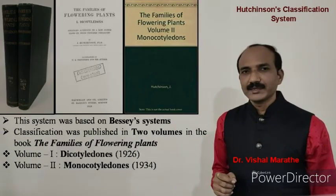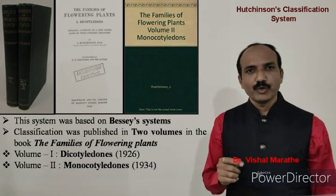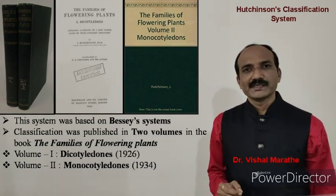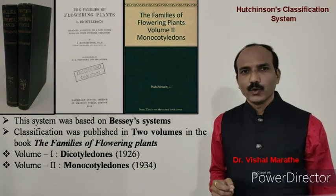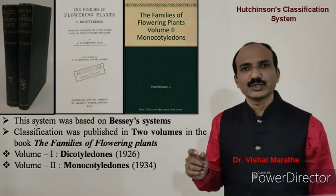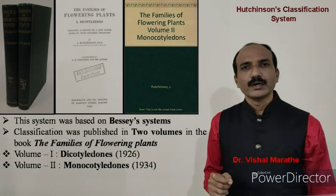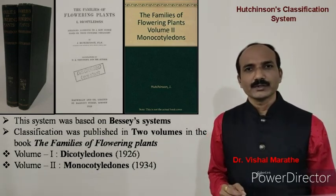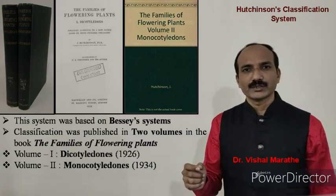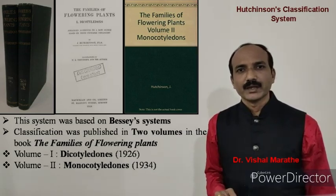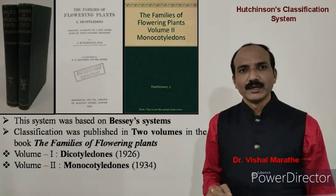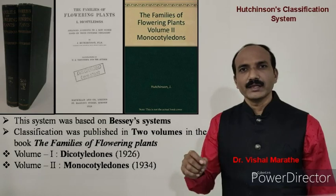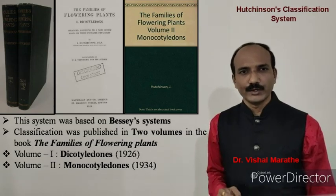This classification system proposed by John Hutchinson was based on Bessey's classification system. Originally, this classification was published in two volumes in the book The Families of Flowering Plants. Volume one, Dicotyledons, was published in 1926, and the second volume, mainly devoted to Monocotyledons, was published in 1934.